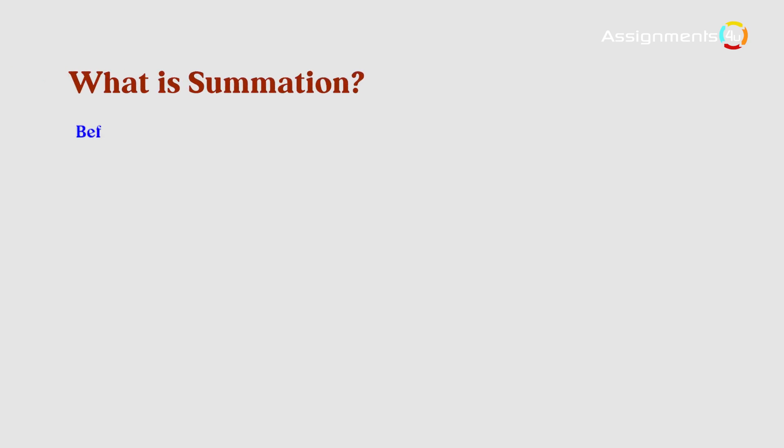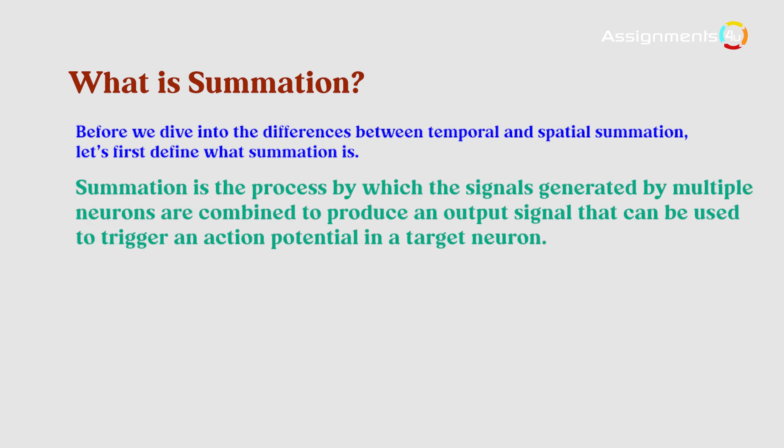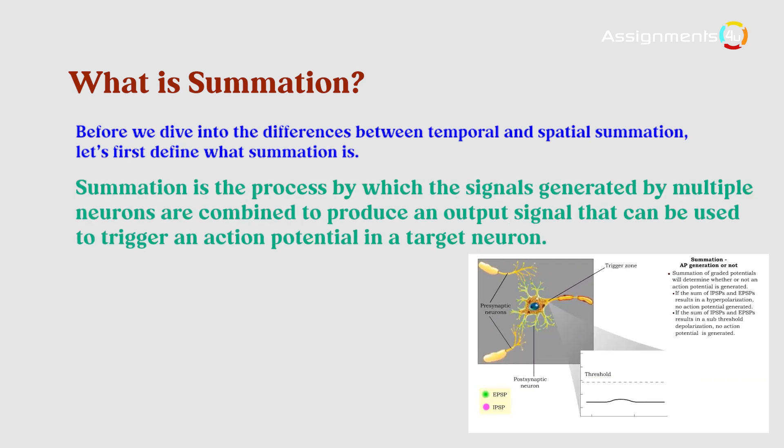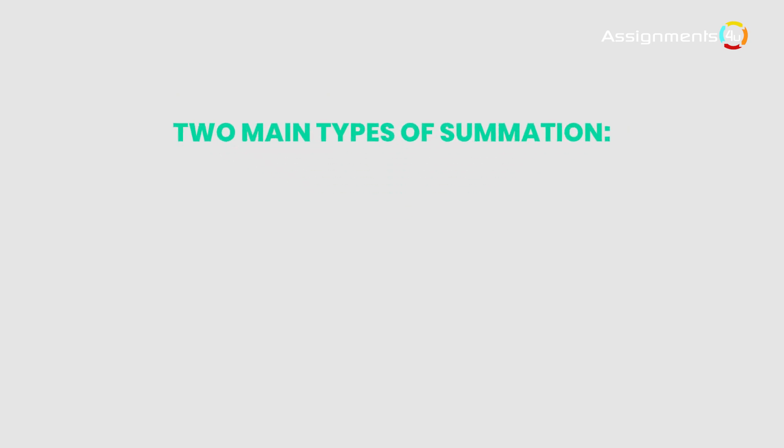What is summation? Before we dive into the differences between temporal and spatial summation, let's first define what summation is. Summation is the process by which the signals generated by multiple neurons are combined to produce an output signal that can be used to trigger an action potential in a target neuron. There are two main types of summation: temporal and spatial.